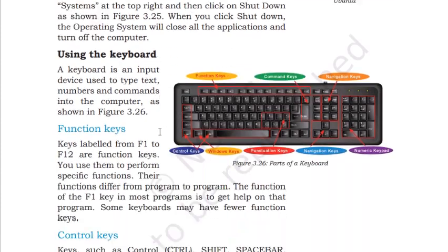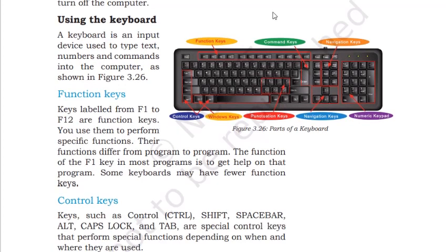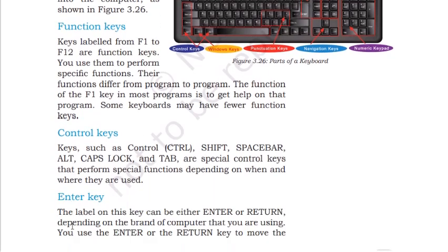The keyboard has function keys F1 to F12, control keys including Control, Alt, Shift, Space Bar, Caps Lock, and Tab. Navigation keys include Home, End, Page Up, and Page Down. Command keys include Insert, Delete, and Backspace. Punctuation keys include semicolon, colon, question mark, single and double quotation marks. The Windows key opens the Start menu. Number keys, Enter key, and navigation arrow keys are also present.